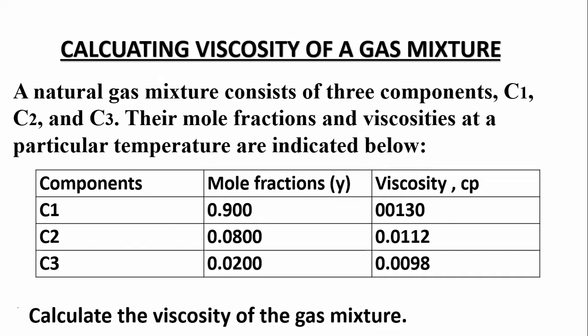Calculating the viscosity of a gas mixture. A natural gas mixture consists of three components: methane, ethane, and propane. The mole fractions and viscosities at particular temperatures are given. We are asked to calculate the viscosity of the gas mixture.